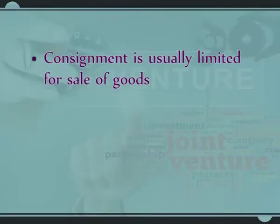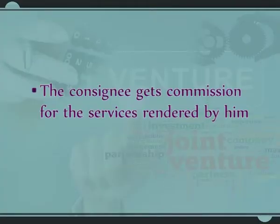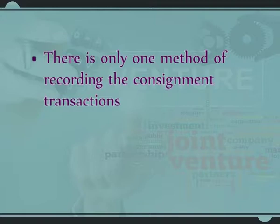Number 7: Consignment is usually limited to the sale of goods. However, a joint venture business may carry on any activity such as purchase and sale of goods, underwriting of shares, or construction of buildings. Number 8: The consignee gets commission for services rendered; co-venturers share the profits or losses in joint venture. Number 9: There is only one method of recording consignment transactions, whereas there are various methods of recording joint venture business activities.